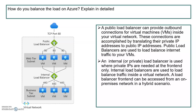The first question is how do you balance the load on Azure? This is a quite commonly asked question in interviews. There are two types of load balancers: one is a public load balancer, and the other is a private load balancer which is used within your virtual network. The picture represents the public load balancer which handles outbound traffic through the public IP. A public load balancer can provide outbound connections for virtual machines inside your virtual network, accomplished by translating private IP addresses to public IP addresses. Public load balancers are used to load balance internet traffic to your VMs.